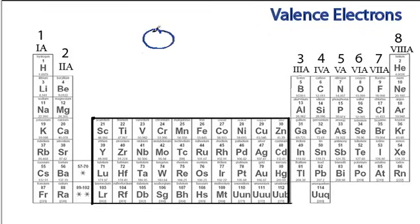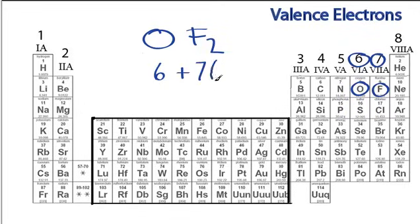Let's try OF2. So we'll look up Oxygen right here in group 6, 6 valence electrons plus Fluorine right next door, 7 valence electrons times 2. And make sure you do your multiplication before you add things. So 7 times 2 is 14. 6 plus 14 is 20. So for OF2, we have 20 valence electrons.